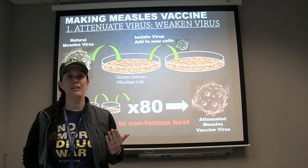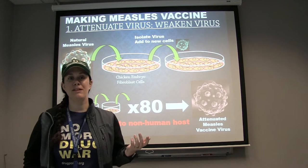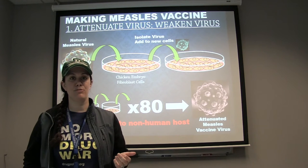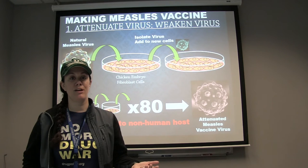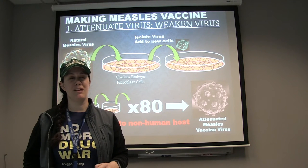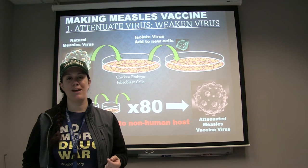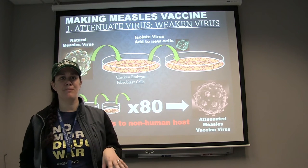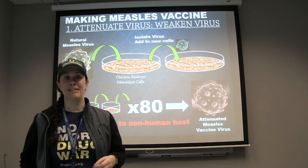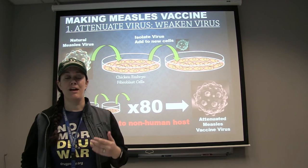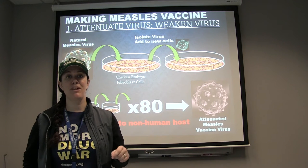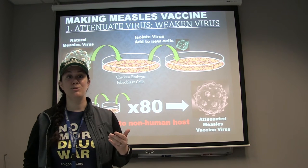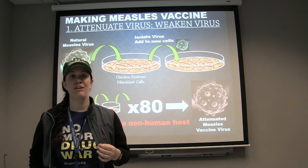So what does weakening the virus actually mean? Always come back to the big picture and what we're trying to do: we're trying to make a pathogen that will stimulate an immune response and create long-lasting memory without making you sick and without you being contagious. Attenuating is one way we do that, and there's really neat science behind it. Viruses are always adapting and evolving to meet the demands of the environment, because their goal is to replicate and propagate themselves.